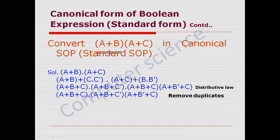Here is another example: how to convert (A plus B) in POS form to its canonical expression. By the same method, we multiply in the missing term and remove duplicates — duplicate means same terms — to get the final output.